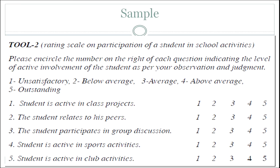Let us look at a sample rating scale which judges a student's participation in school activities. Whenever you prepare a rating scale you must include certain elements: first, give instructions as to what the scale is going to assess; next, describe the pointers and what each point indicates; then list the various attributes. The listing of attributes should be grammatically accurate, unambiguous, simple, precise, and very clear, so that whoever is rating the child's performance does not get confused in interpreting the statements.